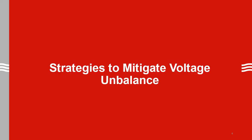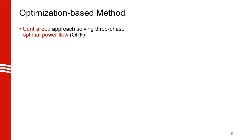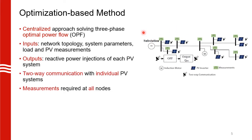Now we look at the different strategies to mitigate voltage unbalance. Our first strategy is an optimization-based method, which is a centralized approach where we solve an optimal power flow problem. Here is an example of a typical distribution feeder with multiple solar PV systems shown by the blue boxes. We also have an expensive induction motor connected to one of the three-phase nodes, which we refer to as the critical three-phase node where we want to mitigate voltage unbalance. Our inputs for this strategy are the topology of the whole network and various measurements from the grid shown by these green boxes.